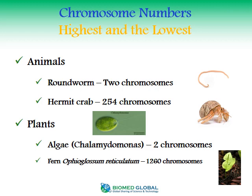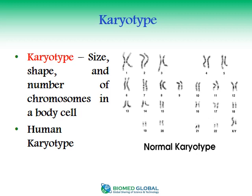The number of chromosomes in organisms varies. Humans have 46 chromosomes, which is 23 pairs. Among animals, the roundworm has just 2 chromosomes while the crab has 254 chromosomes. Among plants, algae has 2 chromosomes while a fern has 1,260 chromosomes.